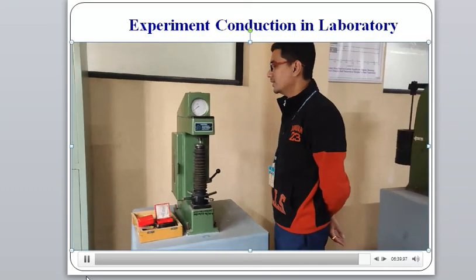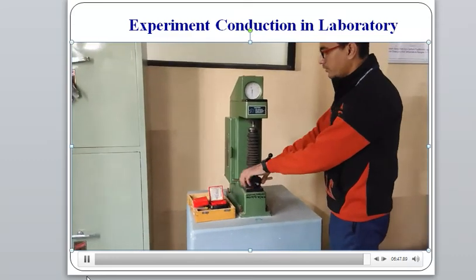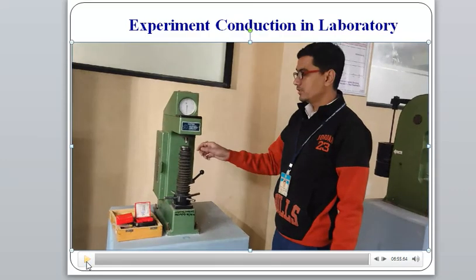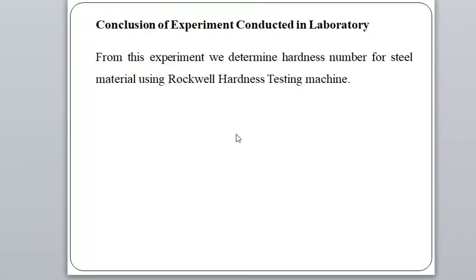The hardness value observed from the dial scale is 65 RC for the first reading of the steel sample. The height of the work table is then decreased and the sample is prepared for the next trial. Conclusion: From this experiment, we determined the hardness number of steel material using the Rockwell Hardness Testing Machine in the actual laboratory.